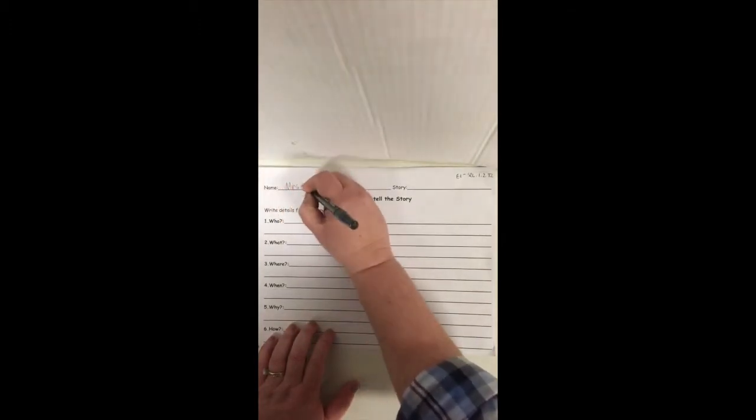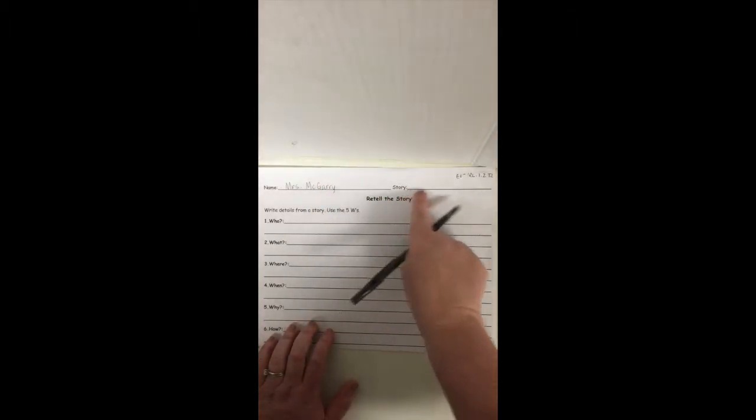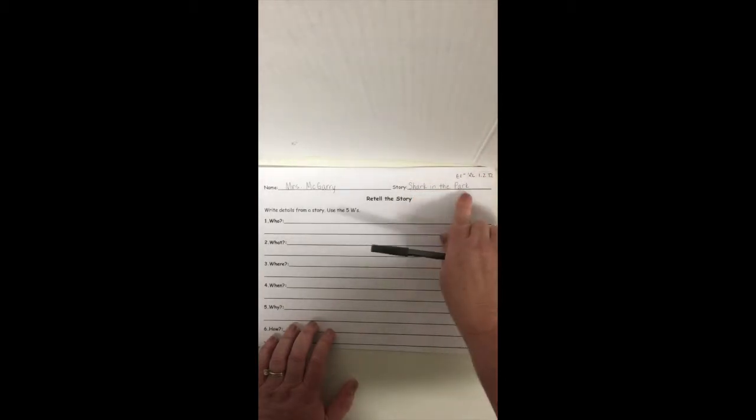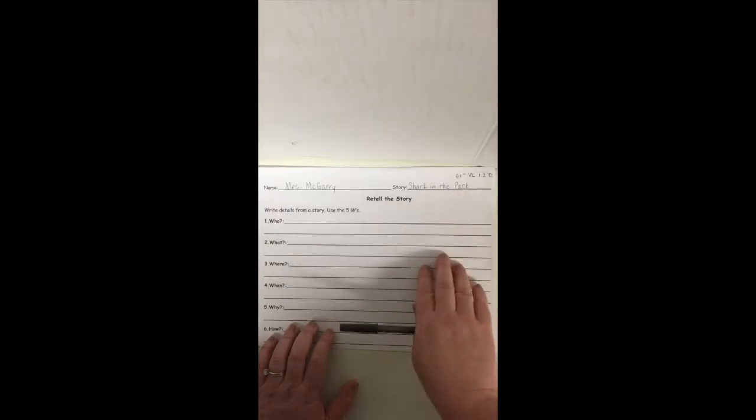I'm going to put my name on the paper because it's very important to always get your name on your paper so you get credit for your hard work. Then I'm going to write the title of the story. Remember titles need to have capital letters for the important words. Definitely the first word, the last word, and any important word in the middle. In the are not important words to the title so they can be small.